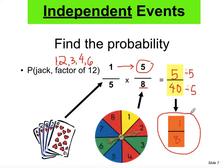So if you pick a random card and spin the spinner, out of eight tries there is one chance of getting a jack and a factor of 12. Does it make it clear? Hopefully you get that one.